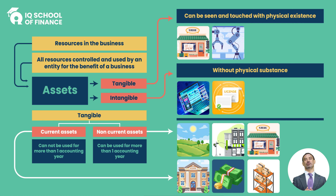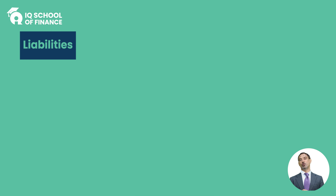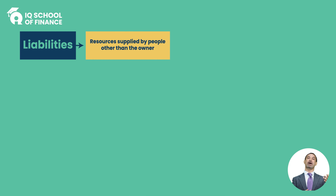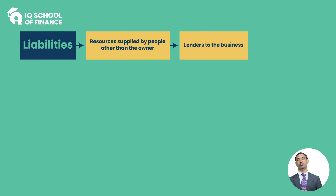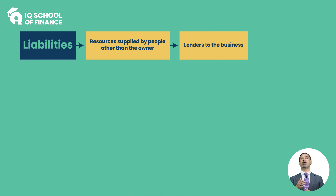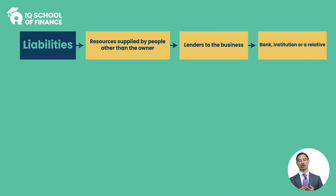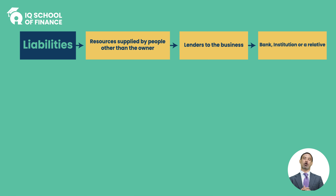यह हमारा पहला head of account, that is assets, complete हुआ। अब second head of account, that is liabilities। इसकी definition: resources supplied by other people is called liabilities, और business obligations are called liabilities। वो तमाम के तमाम पैसे जो हमने किसी से उधार लिए - business ने - और इसको हमें payback करना हो। For example, आपने किसी bank से loan लिया हो, किसी institution से लिया हो, किसी रिश्तेदार से लिया हो - definitely आपको इसको payback करना पड़ेगा, so they are called liabilities।